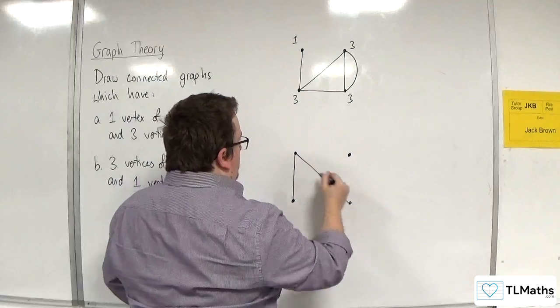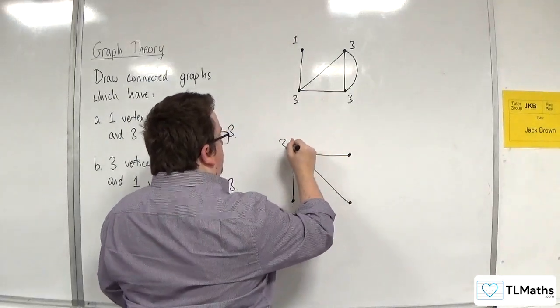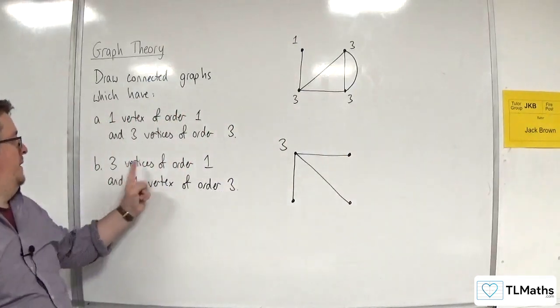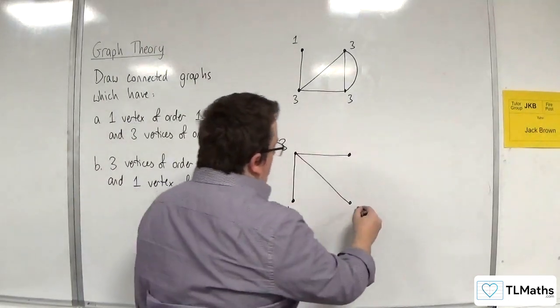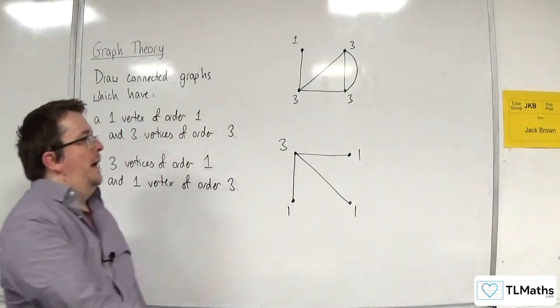So 1, 2, 3. And then the remaining three vertices have order 1. Already done it. 1, 1, 1. And we're done.